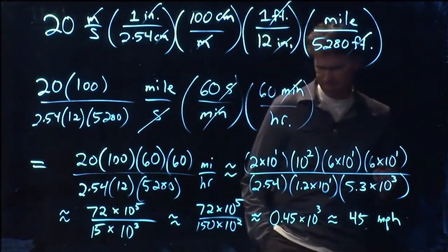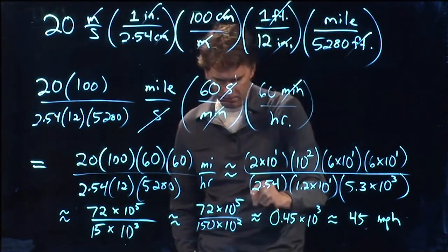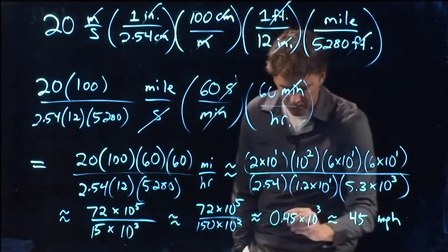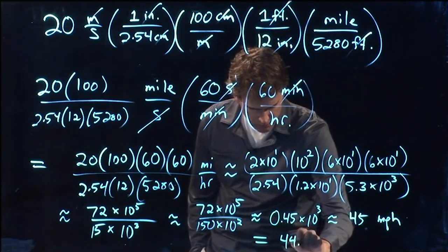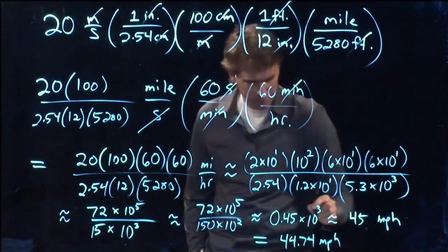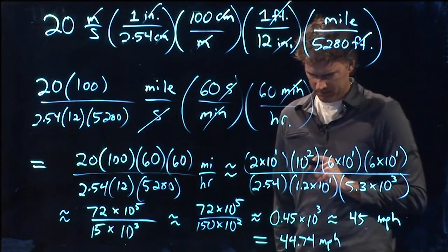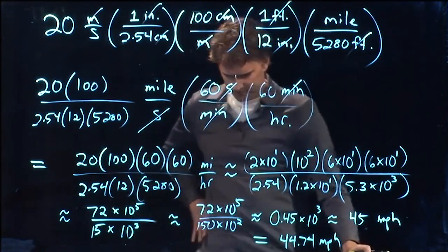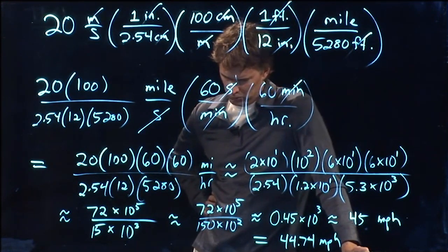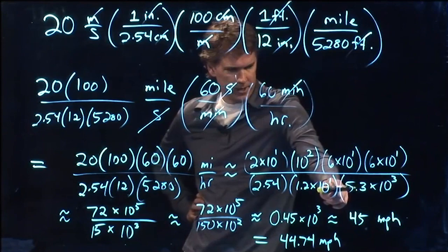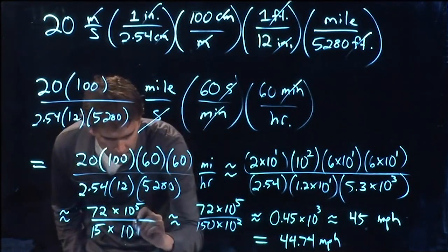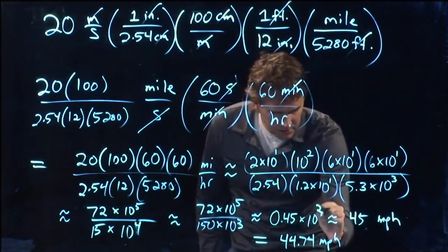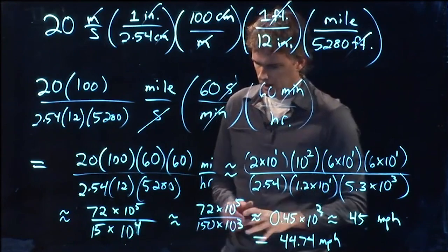Did we do that right? This we did wrong right here, right? What did you guys get when you plugged it into your calculator? 44.74 miles per hour. But this last step here, I think we messed something up. That one right there. And so this is actually 10 to the 3. And this is 10 to the 2. Good. Now we're good. Everybody agree with that?